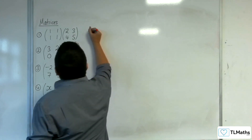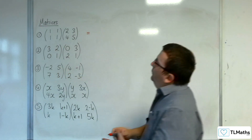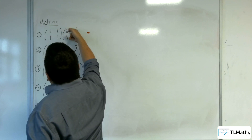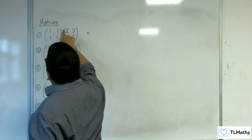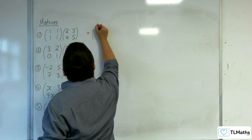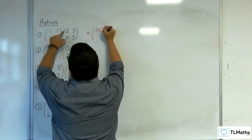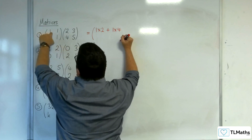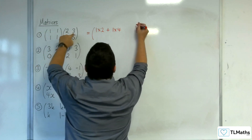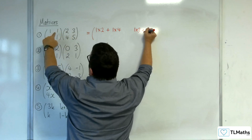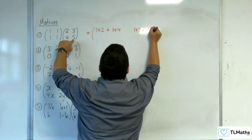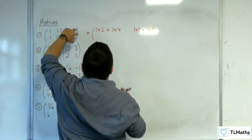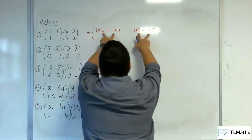For this first one, the way that this works is that you have the top row multiplying with the first column. So you've got 1 times 2, then plus 1 times 4. And then 1 times 3 plus 1 times 5. So the top row multiplies with the first column, and then the top row multiplies with the second column, and that produces your new top row.